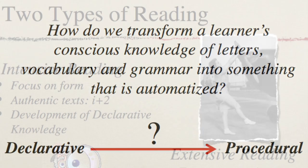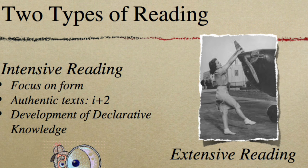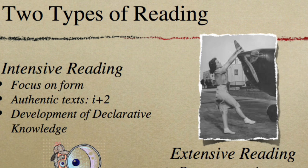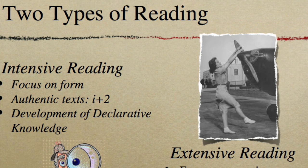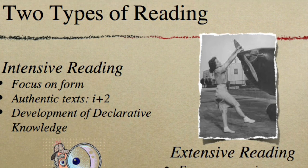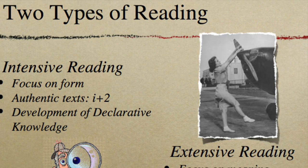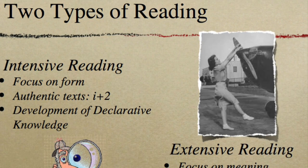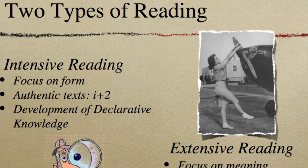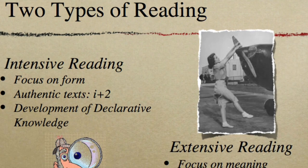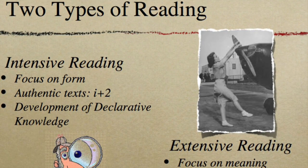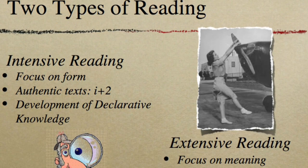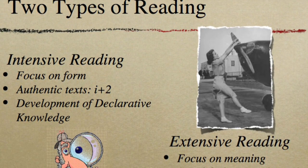In terms of reading, we have two types of reading to do that. The first one is called intensive reading, which is what we normally do in a traditional classroom. We read texts that are difficult — they're frequently authentic texts. We look at the form: vocabulary, grammar, words. We are developing declarative knowledge — our conscious knowledge of the language. We're very much like an inspector, looking at the clues to try to reshape the story.